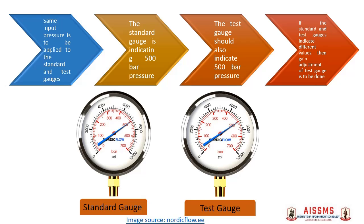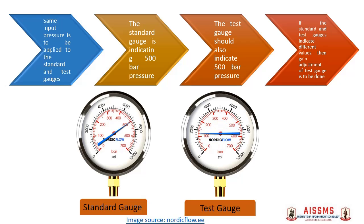Thus, the process of calibration ensures that the instrument gives accurate measurements of any unknown input applied to it. It also helps to ensure that a measurement system, once used over a certain period of time, is still capable of providing accurate measurements. Thank you.